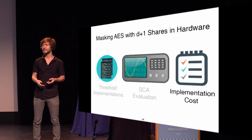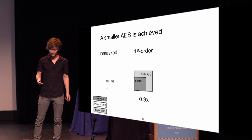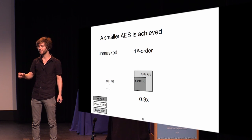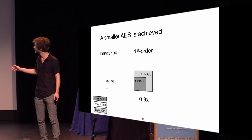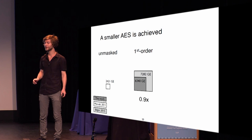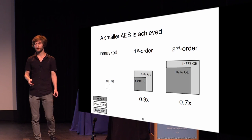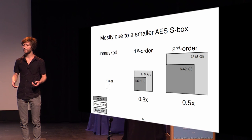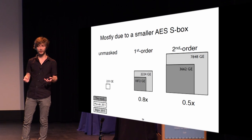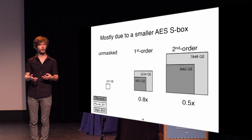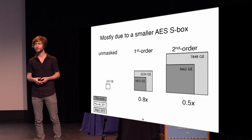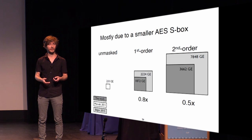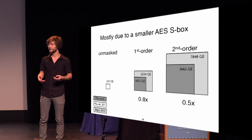We can now assess implementation costs. Going from an unmasked implementation, previous first-order masked AES would scale up to roughly three times. We have reduced that by 10% for the first order and around 30% for the second order — especially in the second order we see a good decrease in area. Most of this area comes from the S-box, since in linear parts D plus one shares were already used in previous work. We achieve a decrease of 20% for the first-order S-box and 50% for the second-order S-box.